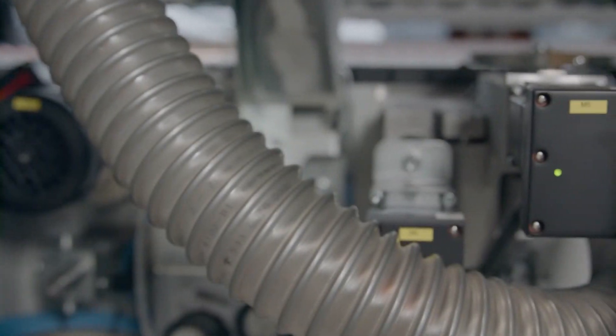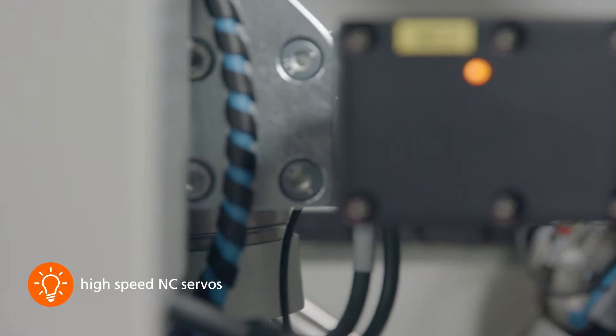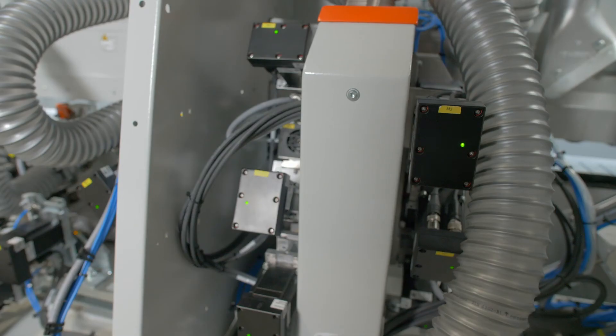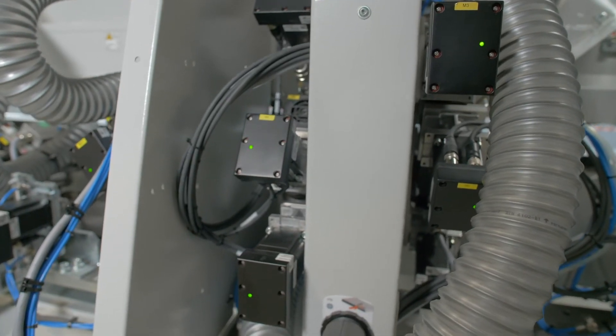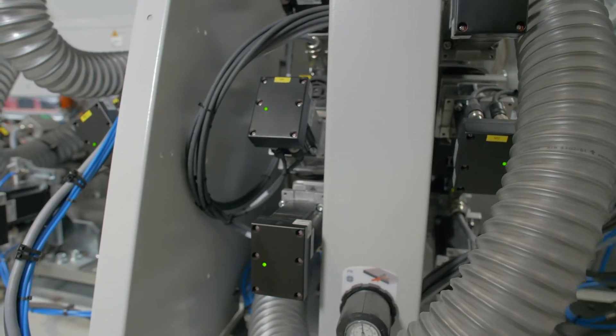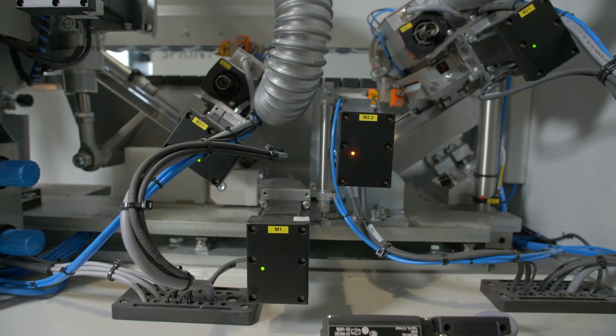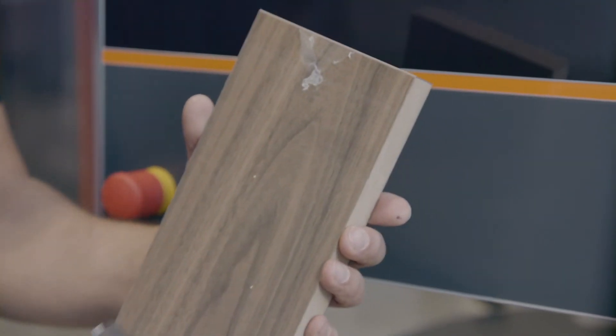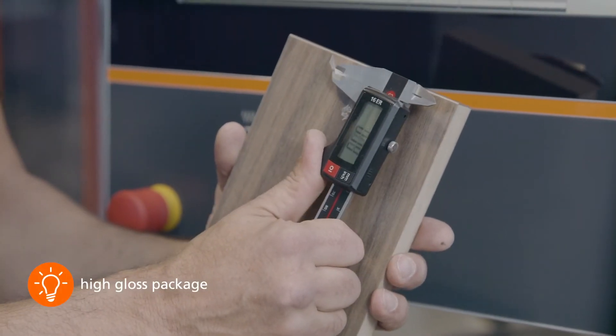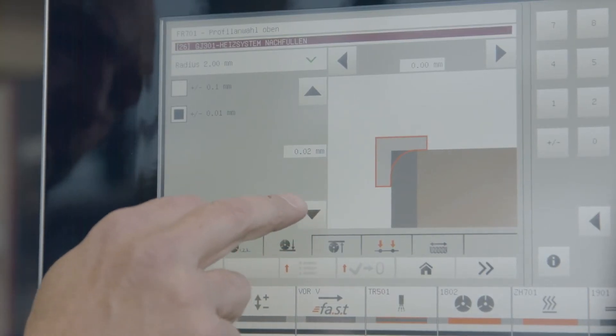The Sprint machines already work with 22 high speed NC servo axes as standard. A wide variety of applications can thus be selected at the touch of a button and with repeat accuracy at any time. Setup times, rejects and test pieces are reduced to a minimum with Sprint machines.